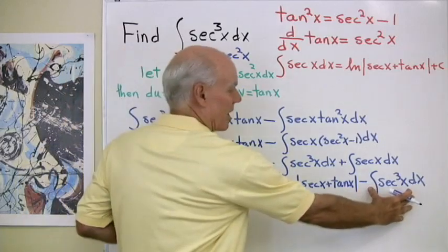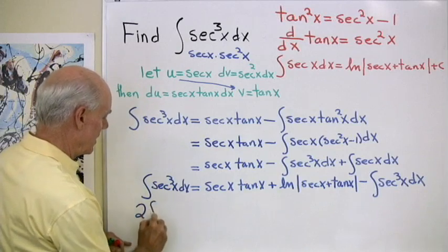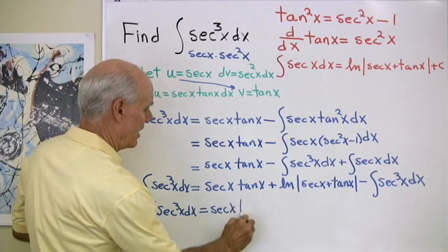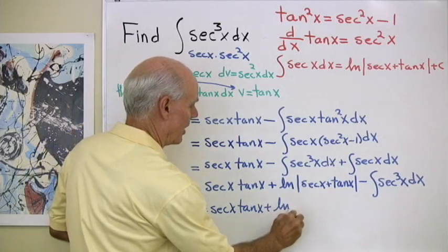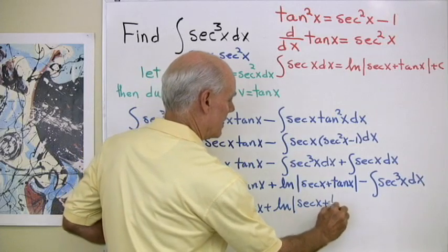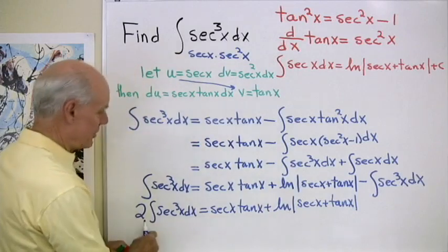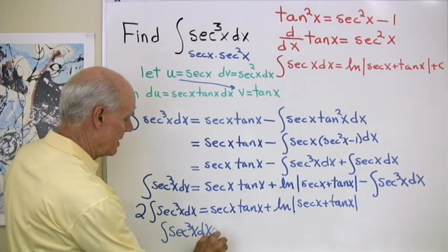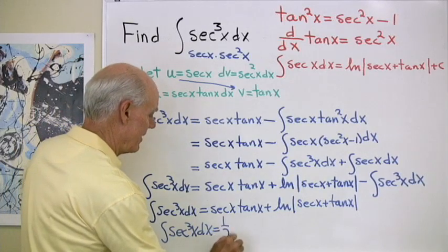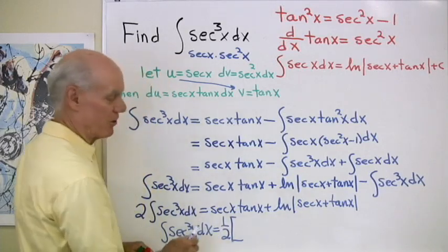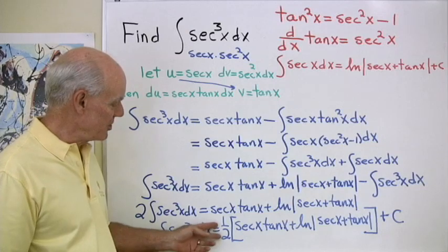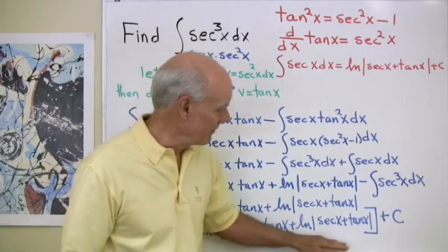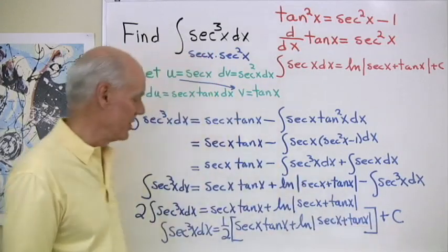This is just an algebraic expression, so I add that integral to both sides. When I add it to both sides, I end up with 2 times the integral of secant cubed x dx equals secant x times tangent x plus natural log of the absolute value of secant x plus tangent x. Then I multiply both sides by one half, giving me the integral of secant cubed x dx equals one half of that whole quantity, and since it's an indefinite integral, I add plus c.